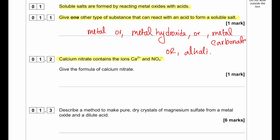Calcium nitrate contains the ions Ca²⁺ and NO₃⁻. Give the formula of calcium nitrate. Calcium is 2+ and nitrate is only 1−. So we write Ca, then NO₃ inside brackets, and we exchange the numbers for the charges. The 2 goes to the nitrate and the 1 goes to the calcium, giving us Ca(NO₃)₂.